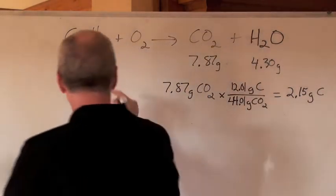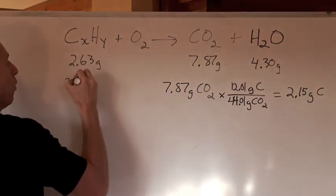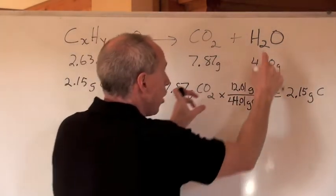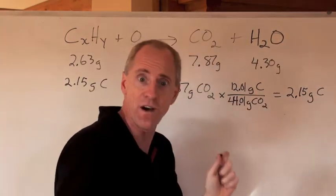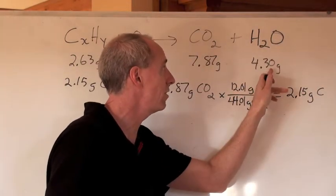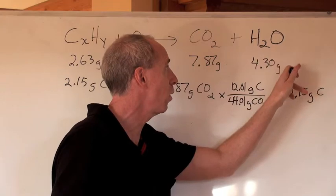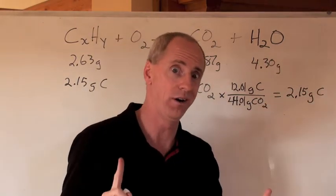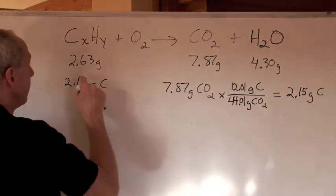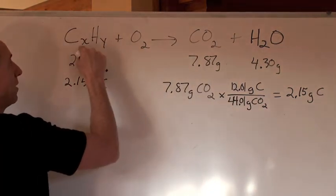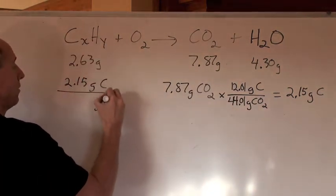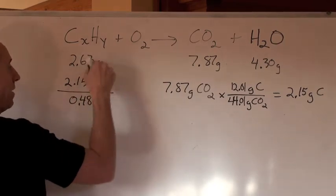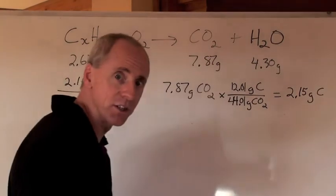Of this compound, 2.15 grams is carbon. You can find the mass of hydrogen by multiplying 4.3 grams of water by 1.01 over 18.02, or you can just say the grams of hydrogen is the difference: 0.48 grams of hydrogen.